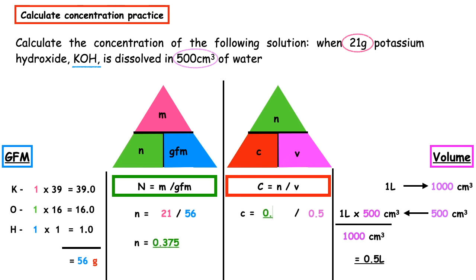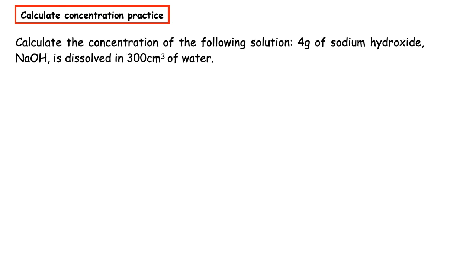We put that into our final equation: concentration equals 0.375 divided by 0.5, which gives us a concentration of 1.33 moles per liter.